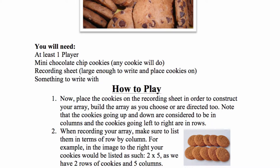First off, start by placing the cookies onto the recording sheet in order to construct your array. Please build the array as you choose or as you are directed to. While constructing your array, please note that the cookies going up and down are considered to be in columns, and the cookies going from left to right are in rows.